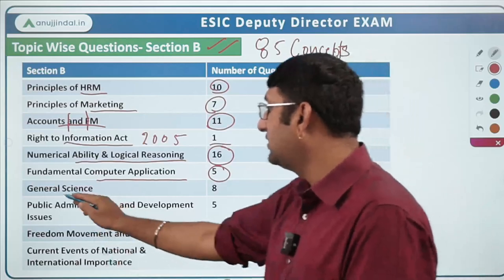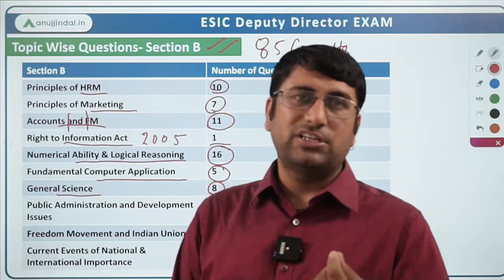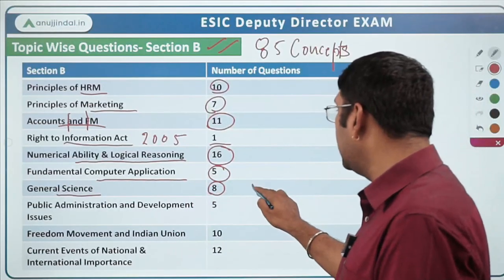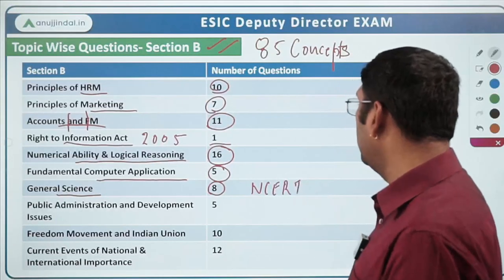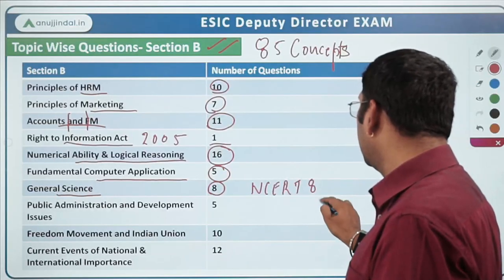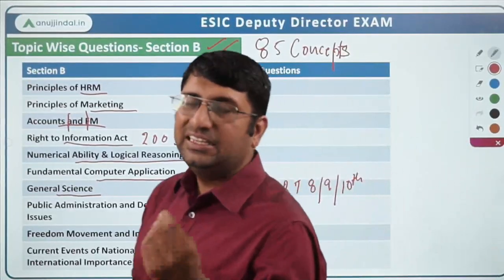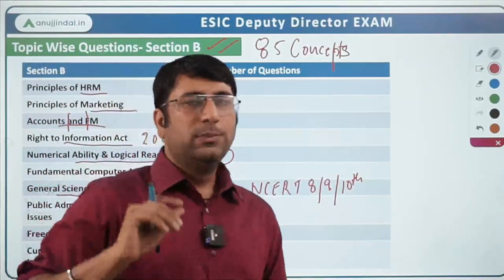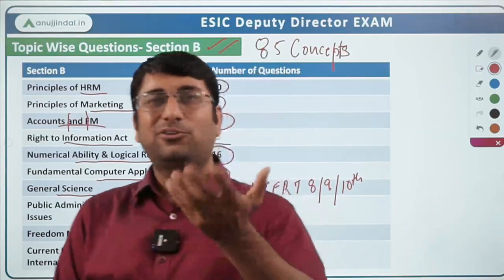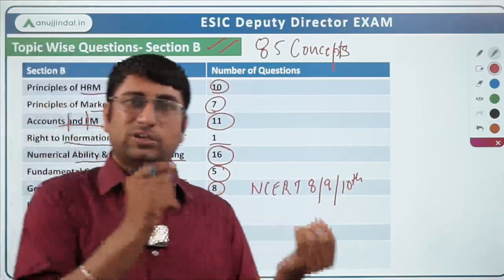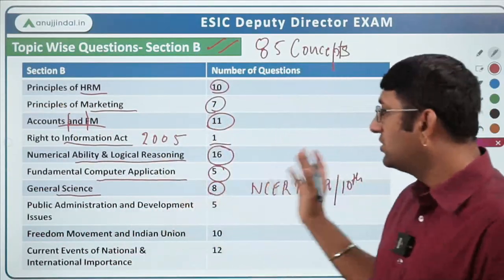Next important topic is General Science, from which 8 questions were asked. Based on my understanding, if you have covered NCERT — which many UPSC aspirants do — just reading the science books for 8th, 9th, and 10th class will be sufficient. Very basic questions from physics, chemistry, and biology were asked, for example 'powerhouse of the cell' (mitochondria) or a chemical formula. You just need to brush up, and there are only 8 questions.